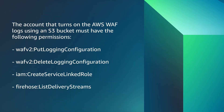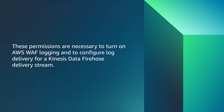The account that turns on the AWS WAF logs using an S3 bucket must have the following permissions: WAF-V2 PutLoggingConfiguration, WAF-V2 DeleteLoggingConfiguration, IAM CreateServiceLinkedRole, and Firehose ListDeliveryStreams. These permissions are necessary to turn on AWS WAF logging and to configure log delivery for a Kinesis Data Firehose delivery stream.